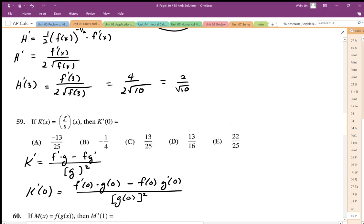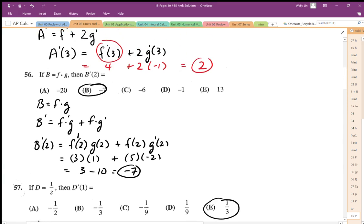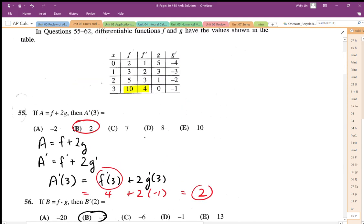So I need to find all those values at x equals 0, so I'm going to go back up to my table. At x equals 0, I have f, f prime is 2 and 1, g and g prime are 5 and negative 4. I'm just going to write these down: 2, 1, 5, negative 4. So that's f, f prime, g, g prime.